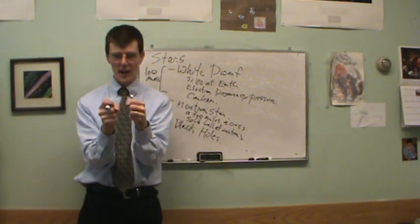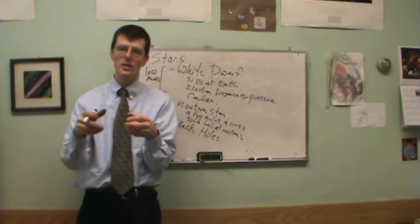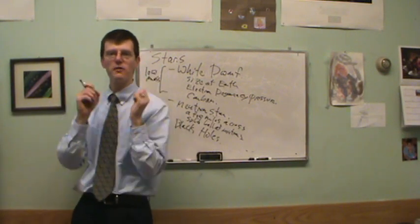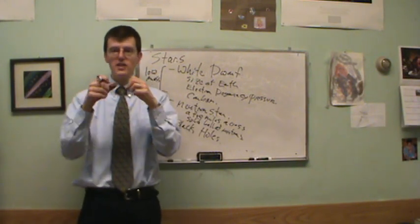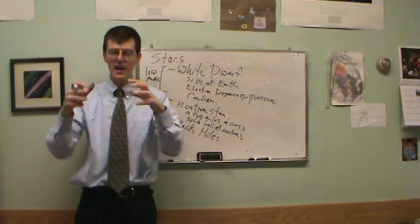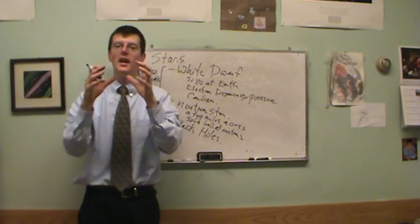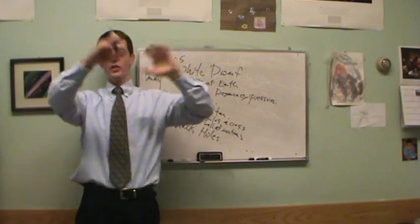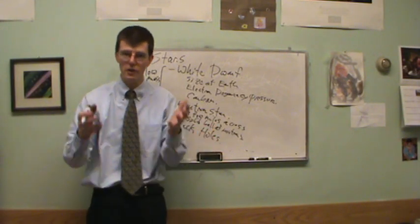They can exist in a close binary system where you've got a white dwarf star and another one, and sometimes the other star can throw material onto the white dwarf. Gravity pulls it in, it builds up a layer, and then it builds up thick enough that it does a flash of nuclear fusion. That's a nova that can happen again and again. If it builds up enough on top of that white dwarf where it pushes it over the limit that electron degeneracy pressure can no longer hold it up, then the whole thing can explode and you can get a different type of white dwarf supernova.